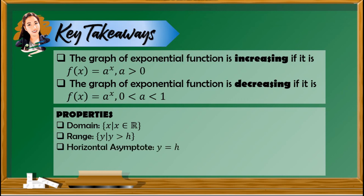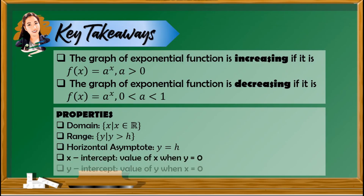The horizontal asymptote is y equals h. The x-intercept is the value of x when y is 0. The y-intercept is the value of y when x is 0. To verify your answers, you may use a graphing software to sketch the graph of the function.